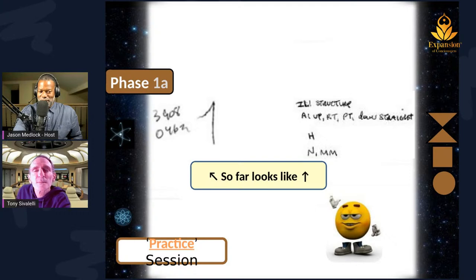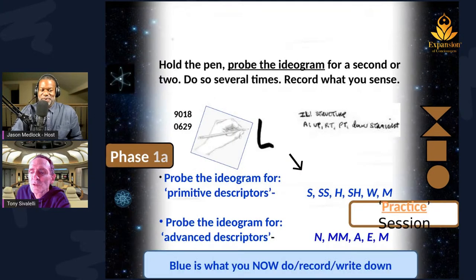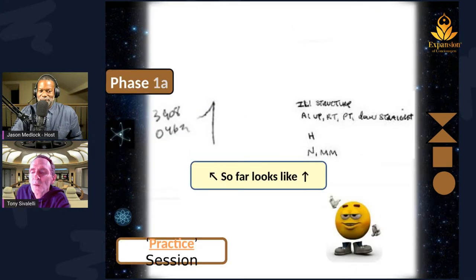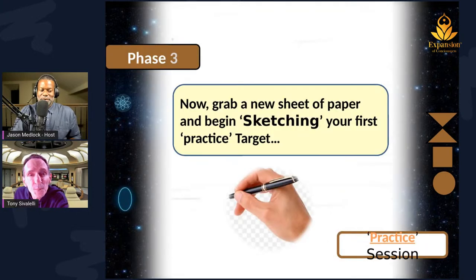So far the session should look like this: we've got the coordinates, the ideogram, the ideogram label, description and movement of pen with words under A. We've probed the ideogram for primitive descriptors, and again for advanced descriptors. One guest says they missed that step — don't worry, it's just a practice session, so don't worry about missing a step. Now we're going to get a whole new sheet of paper, everybody. Put that other sheet aside. Now you want to start sketching out what you sense the target is.